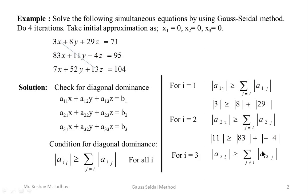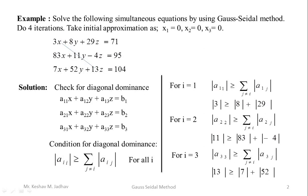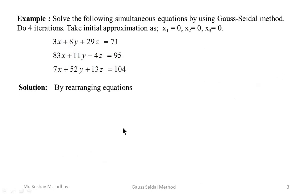For i = 3, a33 is 13, so 13 should be greater than or equal to the sum of 7 and 52 — this condition is also not satisfied. So the condition for diagonal dominance is not satisfied, and we have to rearrange the equations.